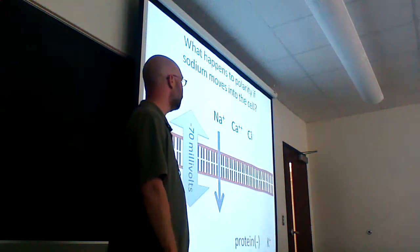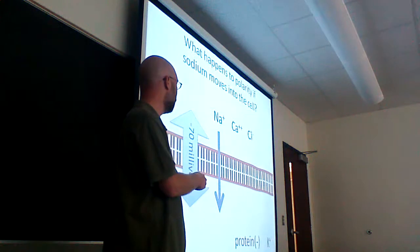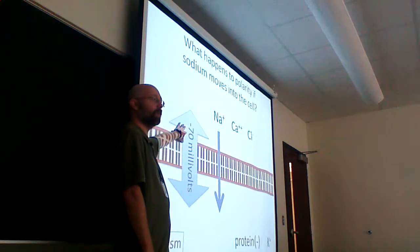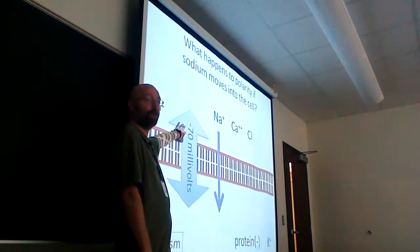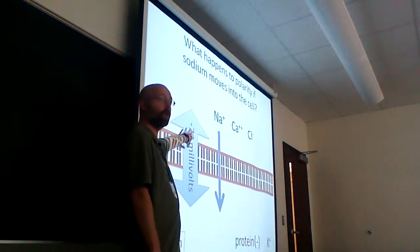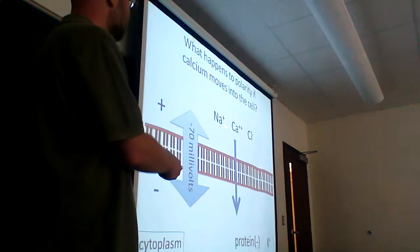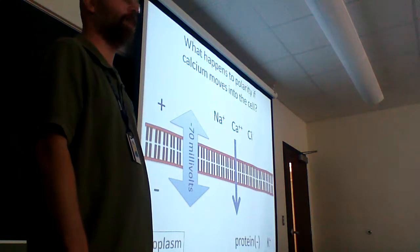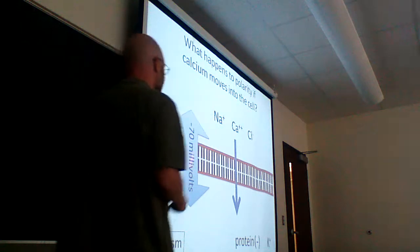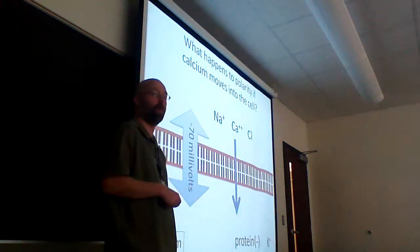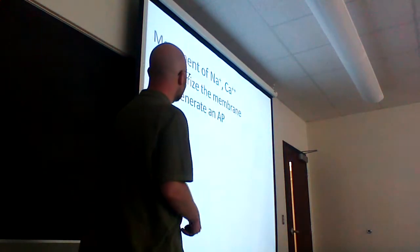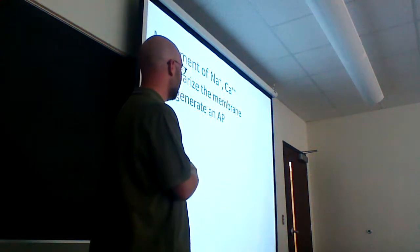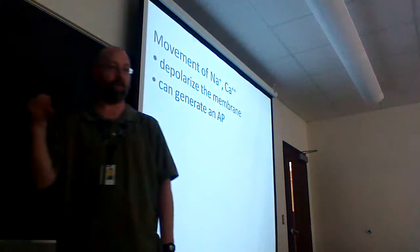When we communicate, we're going to move ions around and change this resting potential. What happens to the voltage if I take sodium and move it inside? It gets closer to zero — that's what it means to be depolarized. Moving calcium does the same thing: you move a positive charge to the negative side, that brings the voltage closer to zero and depolarizes the membrane. Movement of sodium and calcium will depolarize the membrane. If you do that enough, you generate an action potential.